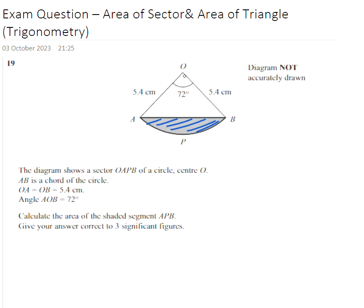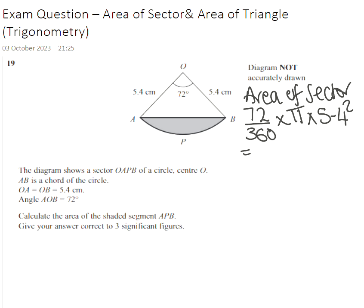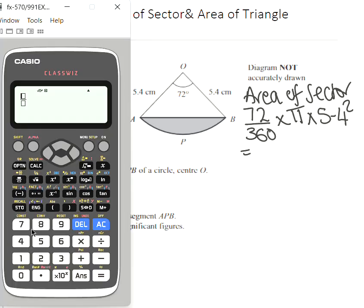The first one is going to be to find the area of this sector here. We need to use 72 divided by 360 times pi times the radius which is 5.4 squared. This is for area of the sector, the circle. If we put this into the calculator, 72 divided by 360 multiplied by pi multiplied by 5.4 squared, we have 18.321.